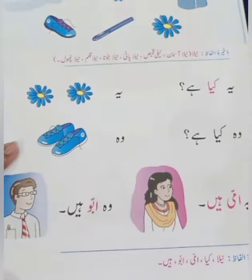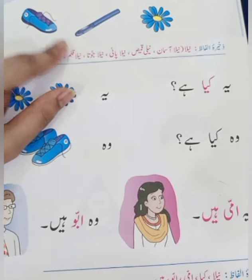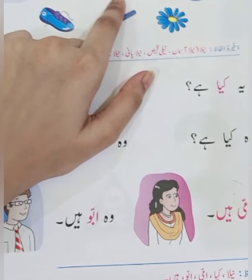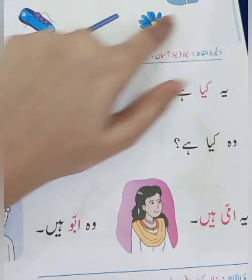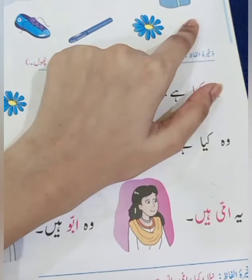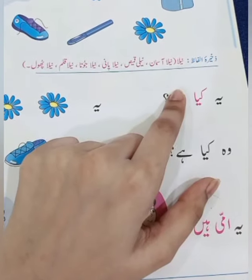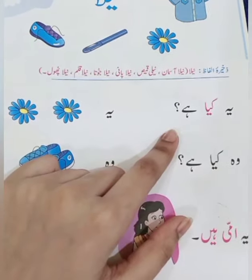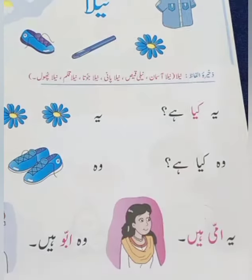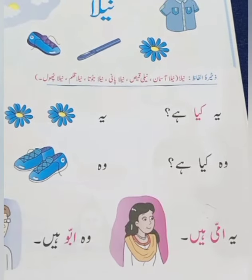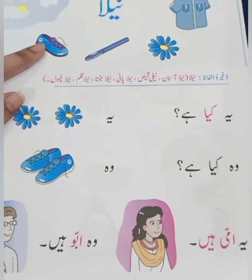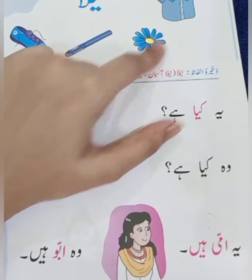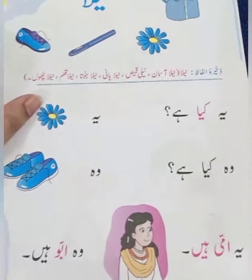صفحہ نمبر بارہ: تو پیارے بچوں، یہ لکھا ہے نیلا۔ نون، یہ لام، الف، نیلا۔ یہ ساری چیزیں نیلے رنگ کی ہیں: نیلا آسمان، نیلی کمیز، نیلا پانی، نیلا جوتا، نیلا قلم، نیلا پھول۔ یہ ساری چیزیں نیلے رنگ کی ہیں۔ نیلا، نون لام الف نیلا۔ (Page 12 - Color Neela/Blue: blue sky, shirt, water, shoe, pen, flower.)